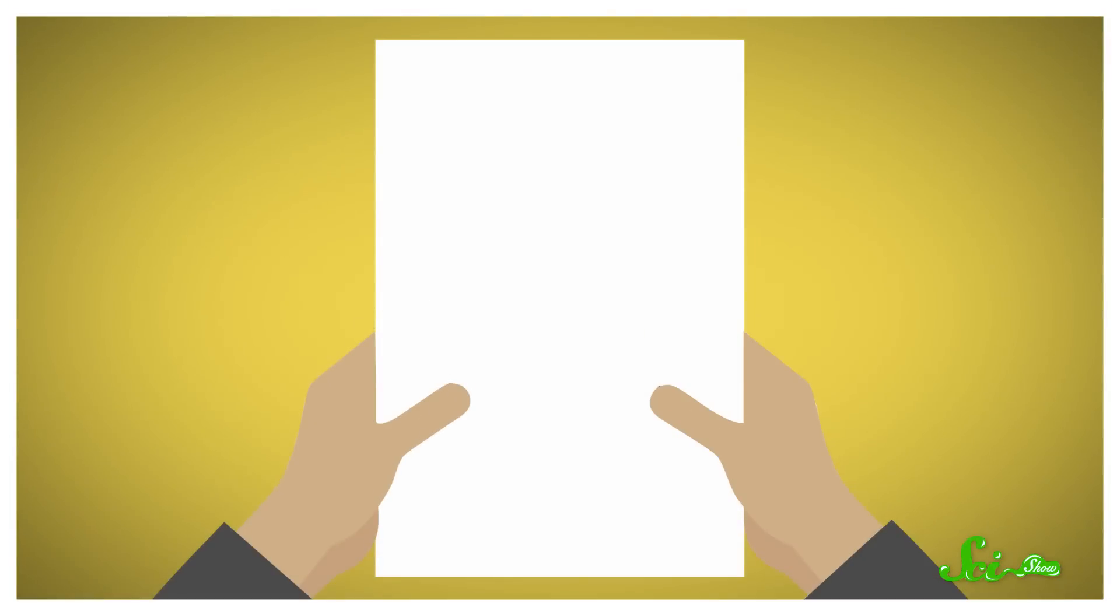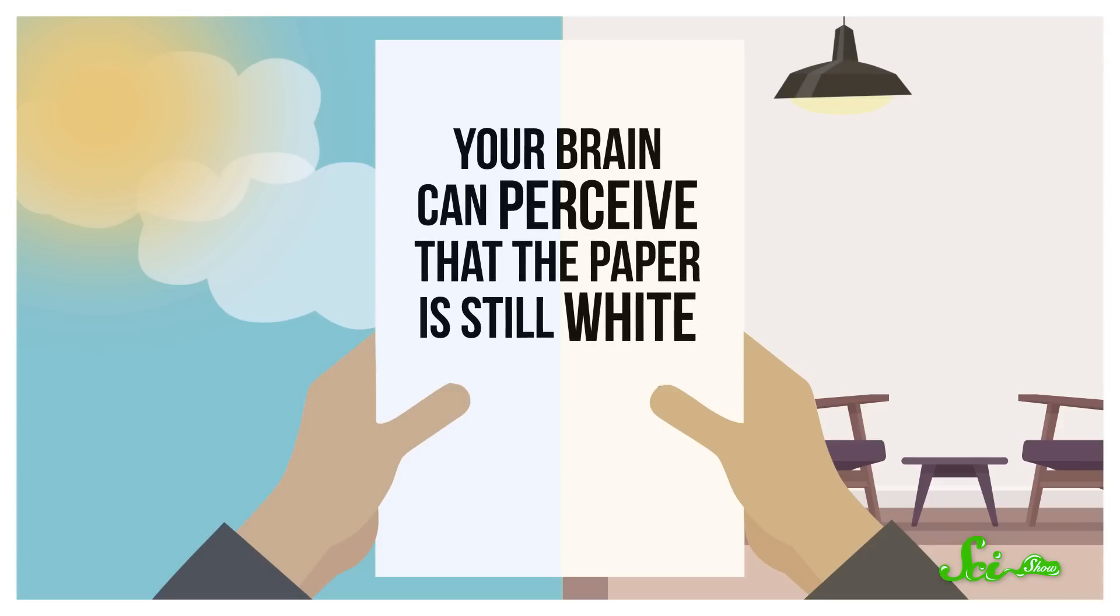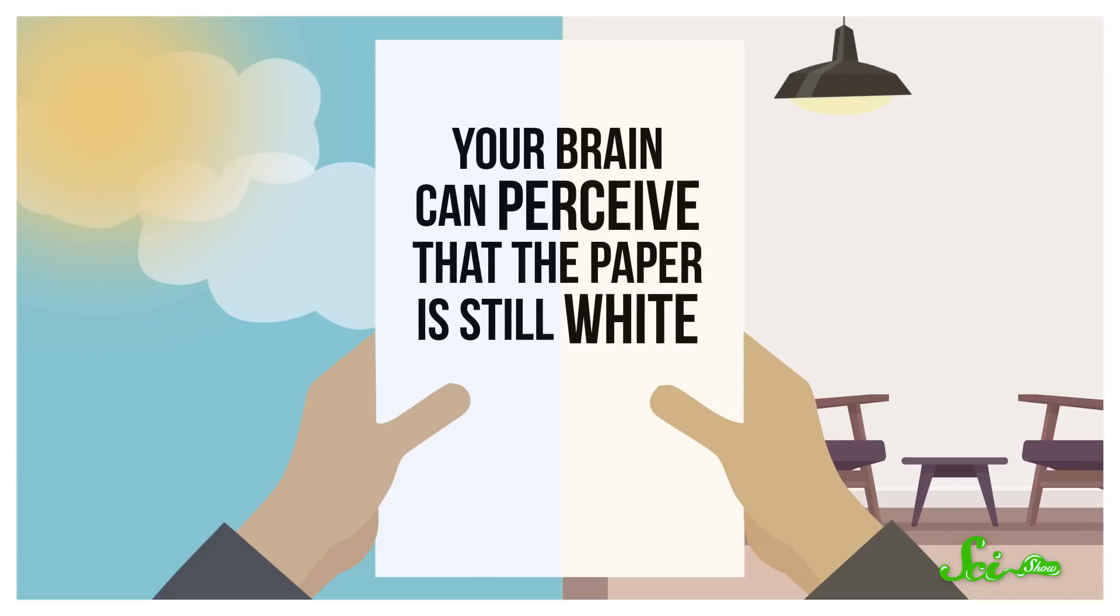Like, a piece of printer paper looks white whether you're inside with incandescent lights or outside with natural sunlight. No matter what yellowish or bluish light is being reflected off the piece of paper into your eyeballs, your brain can perceive that the paper is still inherently white.